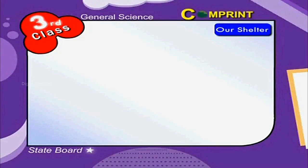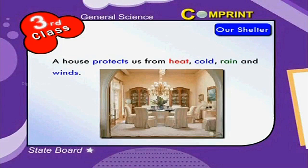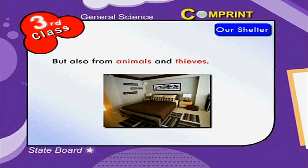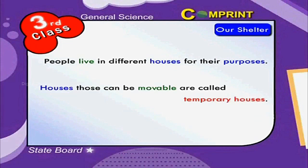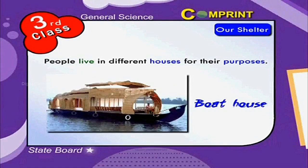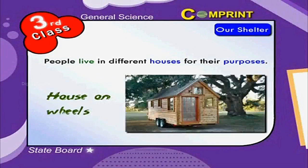Our shelter, a house, protects us from heat, cold, rain, and winds, but also from animals and thieves. People live in different houses for their purposes. Houses can be movable or called temporary houses, like a boat house, caravan, or house on wheels and tents.